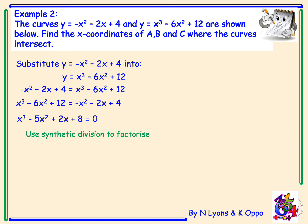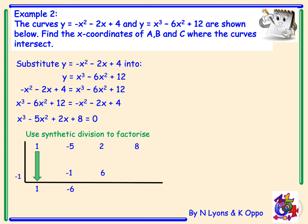We have a cubic function so we use synthetic division. We write our coefficients: 1, minus 5, 2, and 8. We need to guess factors of 8, so I'll try negative 1. Bringing the first coefficient down: negative 1 multiplied by 1 is negative 1; negative 5 add negative 1 is negative 6; negative 1 multiplied by negative 6 is positive 6; 2 plus 6 is 8; negative 1 multiplied by 8 is negative 8; and 8 add negative 8 is 0.